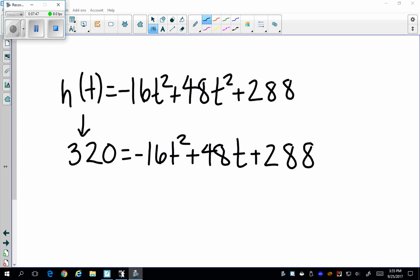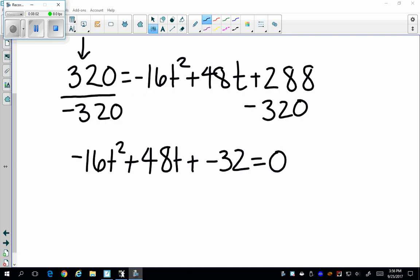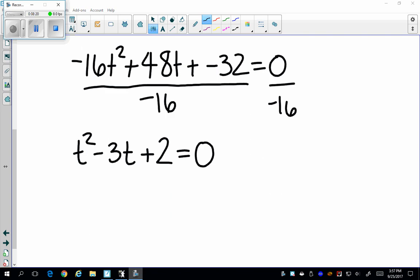In this particular instance, I can also solve it using factoring. So I noticed that I want to find where my height is 320. So all I have to do is look at my original equation and plug in 320 for my height. Subtracting 320 from both sides, I set my equation equal to zero. I also noticed that every term, I can take out a negative 16. So I'm going to divide both sides by negative 16. Dividing each and every term by negative 16. And I'm left with t squared minus 3t plus 2 equals zero.